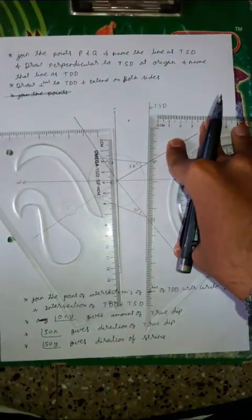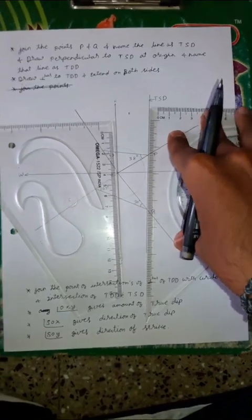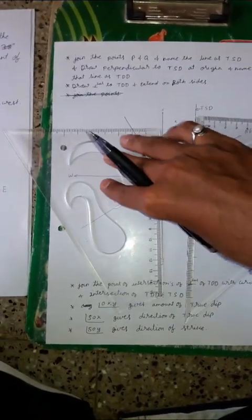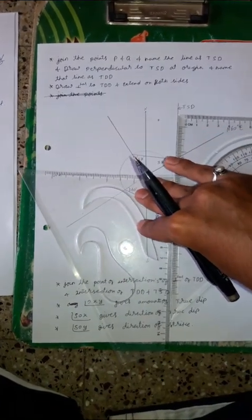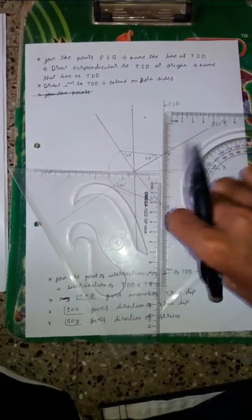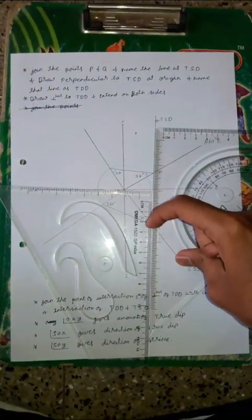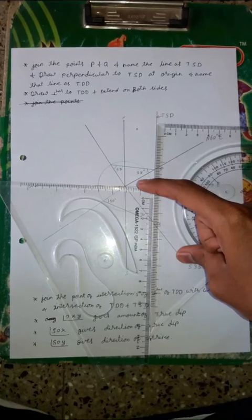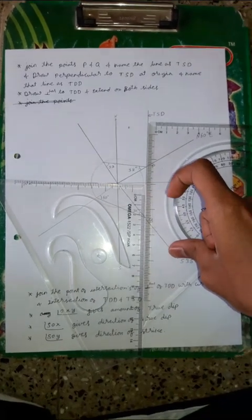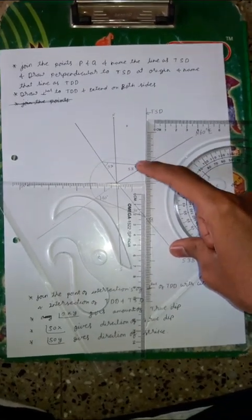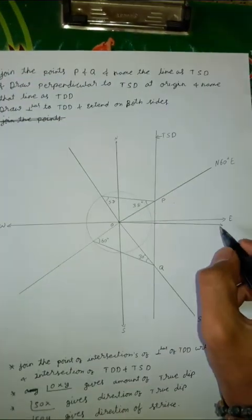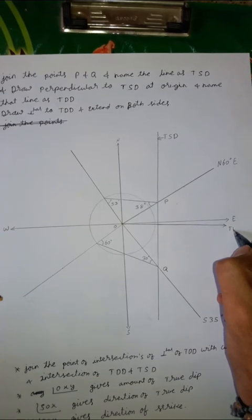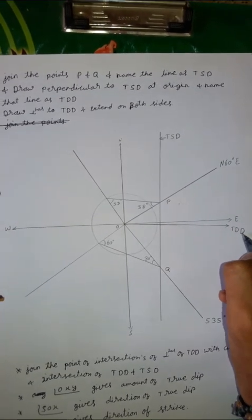Now, hold one set square parallel to the TSD line and another one perpendicular to it. Slide the second set square until it touches the origin and is perpendicular to the TSD. At this point, draw a line. Label this point as TDD — true dip direction.